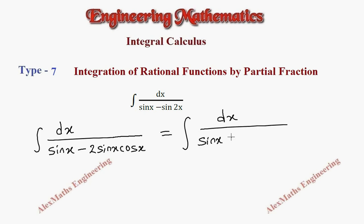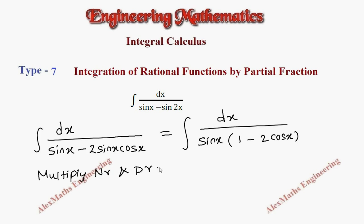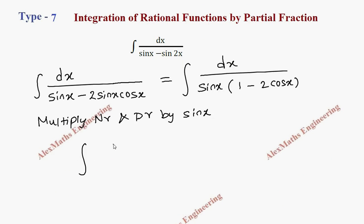When sin x is taken common, we get the remaining factor as (1 minus 2 cos x). Now we have to multiply the numerator and denominator by sin x. So the numerator will become sin x dx.